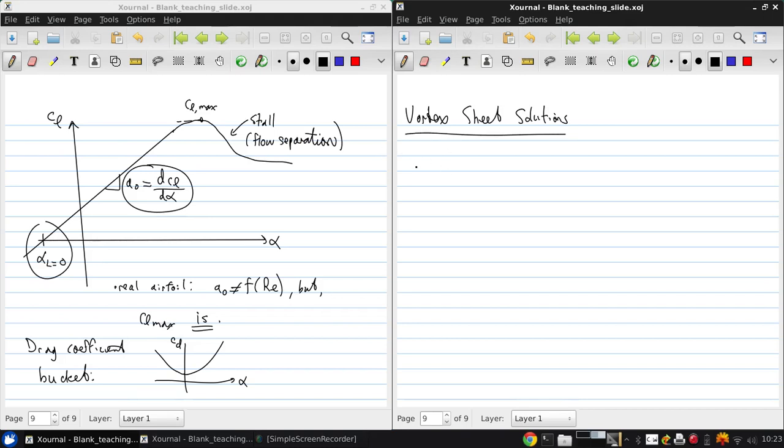We start with the Vortex Filament idea, which is a long straight segment, infinitely long, with vortices distributed all along its length. And if we put a bunch of these next to each other, we get a Vortex Sheet.